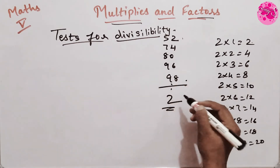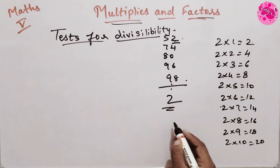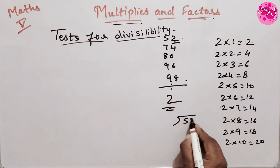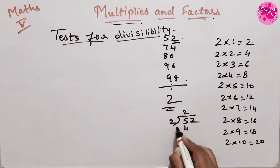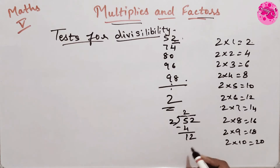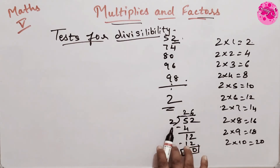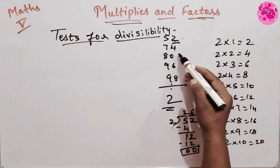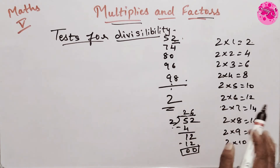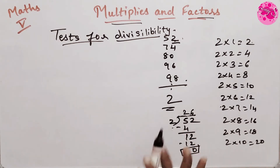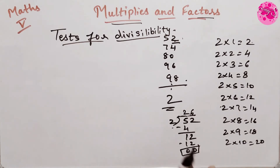So here we have to do the divisibility. For example, 2 times 26 equals 52, subtract 52, we get 0 as a remainder. So 52 is divisible by 2. It is very difficult to do the division of all numbers one by one, so to make it easy they have given us a few steps — the test for divisibility.